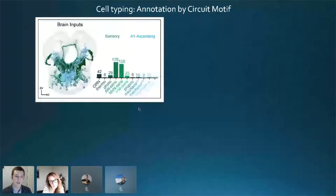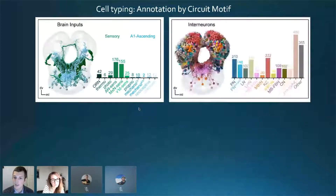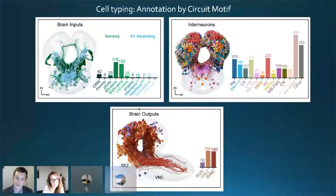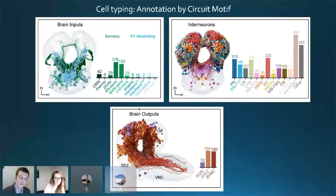We now have a breakdown of the brain inputs, many different categories of brain interneurons, and the three brain output types. This is a great start — we can say something about almost every brain neuron. However, we wanted to go to an even finer scale and do something more unbiased.